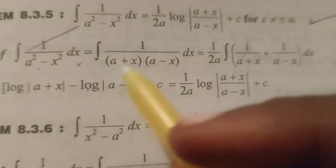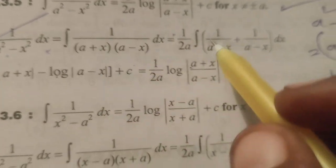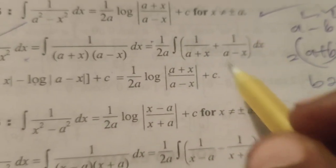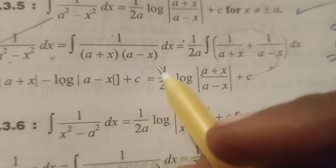Here now splitting up into 1 by 2a integral of here write 1 by a plus x plus 1 by a minus x. After simplifying this we will get the same result 1 by a plus x into a minus x.